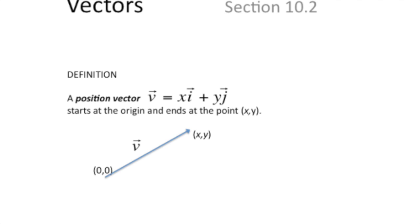Position vectors: up until this moment, whenever you wanted to give the position of a point, you gave a horizontal and vertical component — x comma y. The position vector is the vector that goes from the origin, or the pole, from your reference point, to the point. So this vector, which has a direction and a magnitude, describes the position of this point relative to the origin in the same way that x comma y would. Every point has a position vector; you can identify any point on a plane either with x comma y or with a position vector.